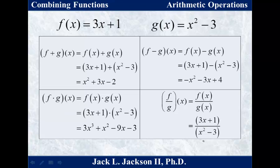f plus g of x is just f of x plus g of x. f of x is 3x plus 1, g of x is x squared minus 3. We can simplify and reorganize: that gives us x squared plus 3x, and taking 1 minus 3 gives minus 2, so we get x squared plus 3x minus 2.